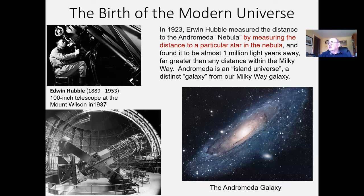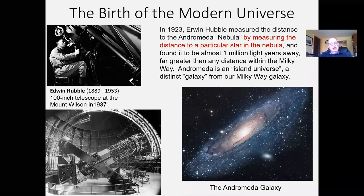We finally come to the birth of the modern universe with the discoveries of Edwin Hubble. In 1923, Hubble showed that the distance to the Andromeda Nebula was of tremendous size. He found this by finding the distance to one particular star in that nebula — a distance beyond any measurement known beforehand in terms of individual stars within the Milky Way. I want to tell you that story and go through the physics involved, as it introduces some of the most important ideas that will hold us in good stead throughout our entire course.